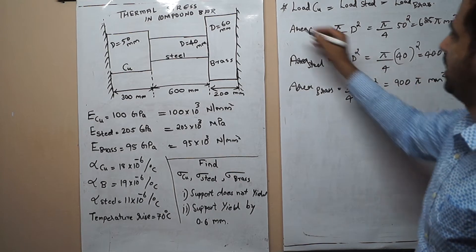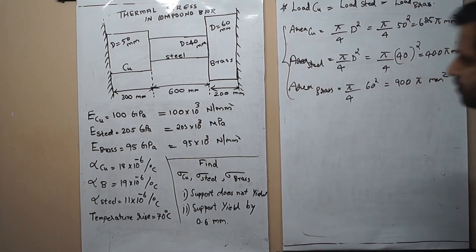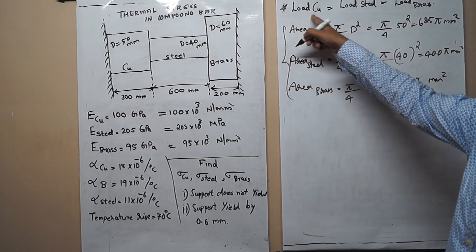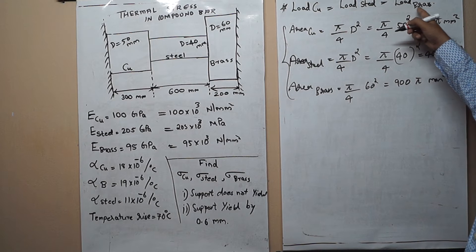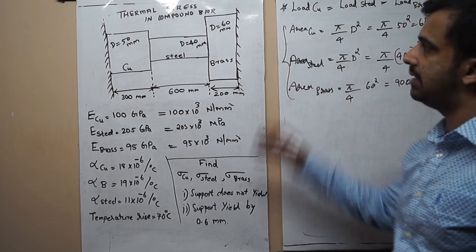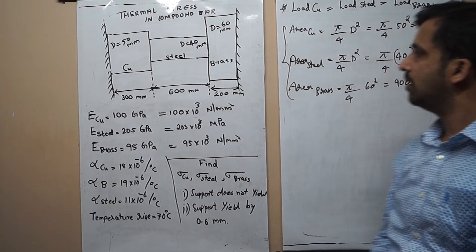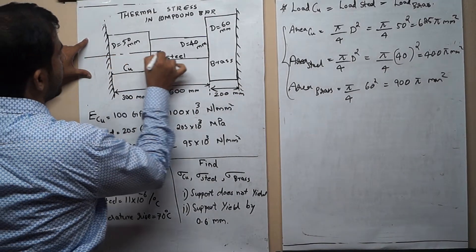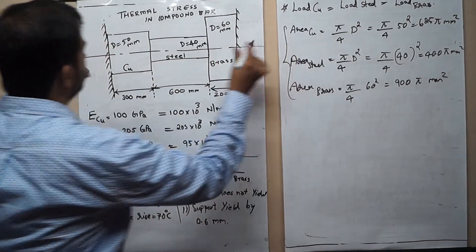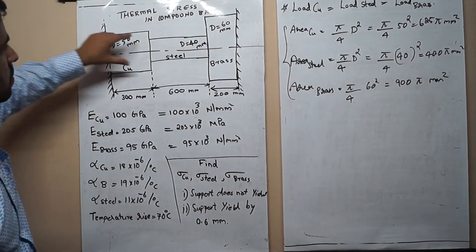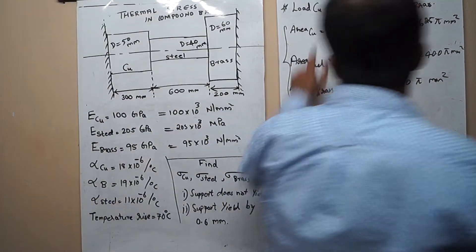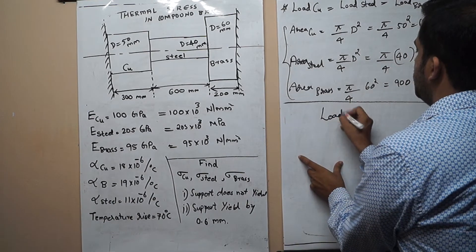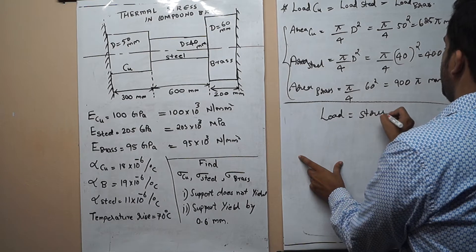Now I will use the principle that load on copper equals load on steel equals load on brass for a compound bar. Considering the axis of the compound bar, the load acting on copper, steel, and brass must all be the same. Load equals stress multiplied by area.